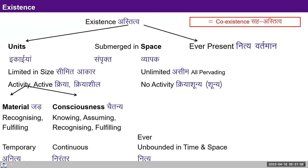If we look at this existence, this coexistence is of units that are submerged in space. The two are being talked of separately because these are two separate realities. Units are a different reality; space is a different reality. Units are limited in size, but space has no boundary — it is unlimited. Units have activity, but space has no activity, what you call Shunya, or Kriya Shunyata in Hindi.